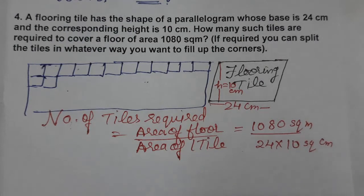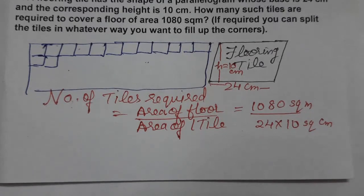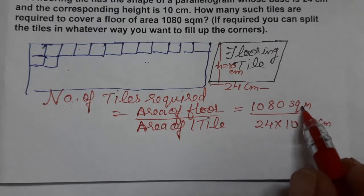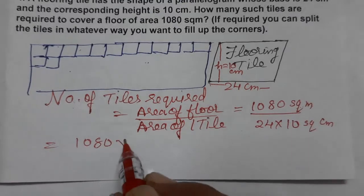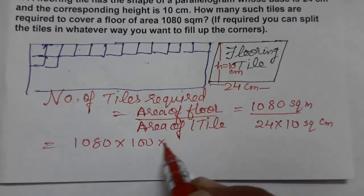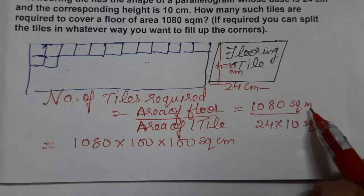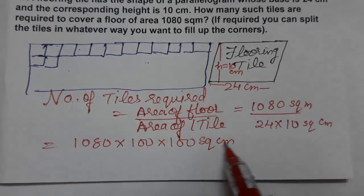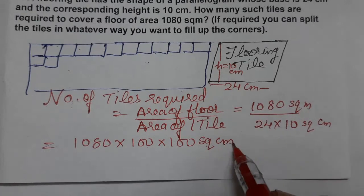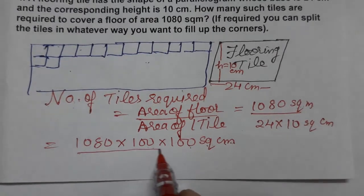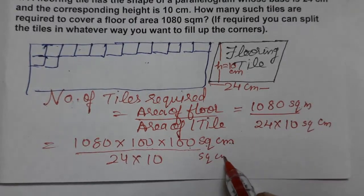Since the tile area is in square centimeters, we need to convert the floor area from square meters to square centimeters. 1 meter equals 100 centimeters, so 1 square meter equals 100 × 100 = 10,000 square centimeters. Therefore, 1080 square meters equals 1080 × 10,000 = 10,800,000 square centimeters.